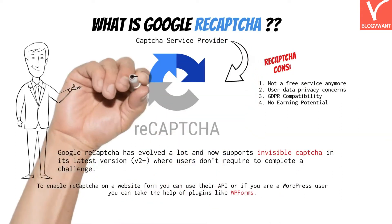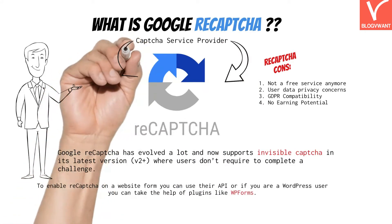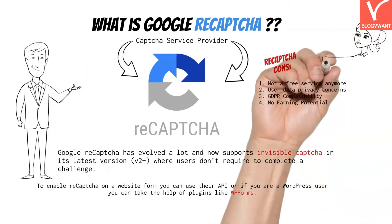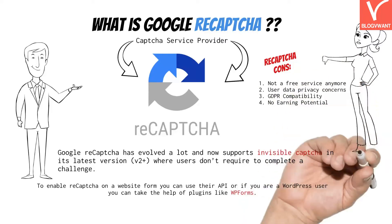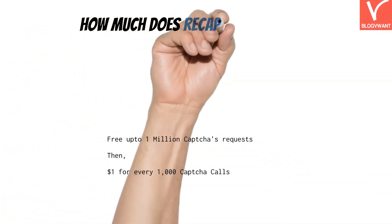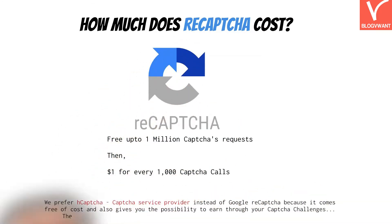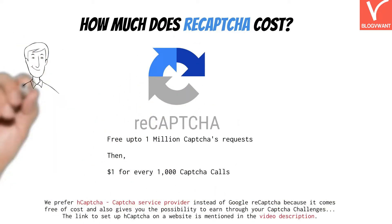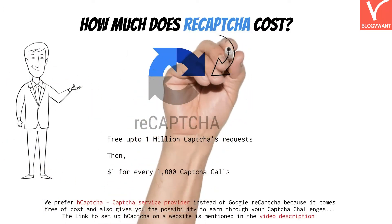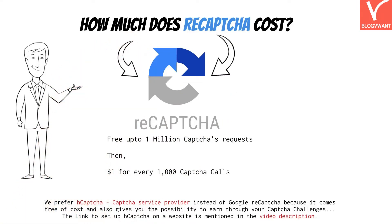Regardless of Google reCAPTCHA's popularity, people are constantly switching to different CAPTCHA providers because of a few disadvantages: it is no longer a free service, user data privacy concerns, GDPR compatibility issues, and earning potential. Google reCAPTCHA is free up to 1 million CAPTCHA requests. After that, a user has to pay $1 for every 1,000 CAPTCHA requests.